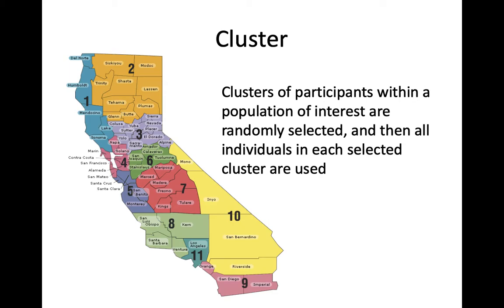It's also possible to use a multi-stage sampling process, where you get two random samples. You get a random sample of clusters, and then once you have those clusters, you also randomly sample within each cluster. Going back to the high school example: you could randomly sample 100 high schools, and then within each high school do a random sampling process rather than including every single person. That would be a multi-stage sampling technique — cluster sampling followed by simple random sampling within each cluster.